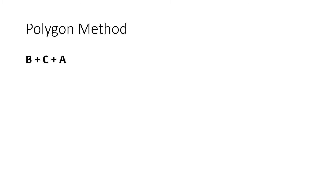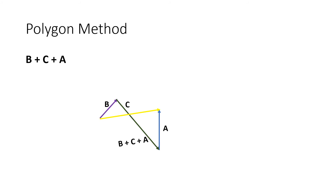Let's now do B plus C plus A. We have vector B with the same magnitude and same direction, then we connect vector C, and lastly vector A. We connect the initial point — that is the tail of vector B — to the endpoint of vector A. It will be just the same as what we got from A plus B plus C. The magnitude should be the same, and the direction should also be the same. This is our resultant vector, we call this B plus C plus A.